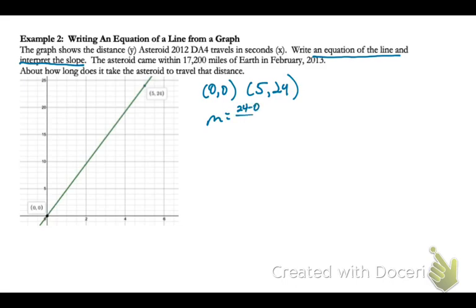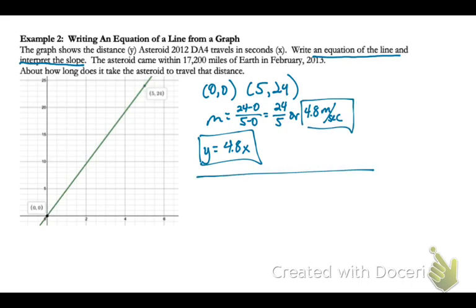So the first thing we're going to focus on is writing an equation of the line. Just by looking at the graph, I see I have two points clearly visible: (0,0) and (5,24). I can find the slope, and this is going to be easy. It's just 24 fifths. But this is a real-life situation, so I want to do this in terms of miles per second, so 4.8 miles per second. That's pretty fast.